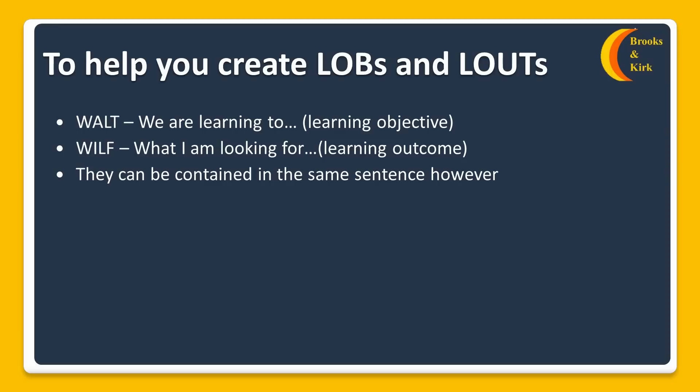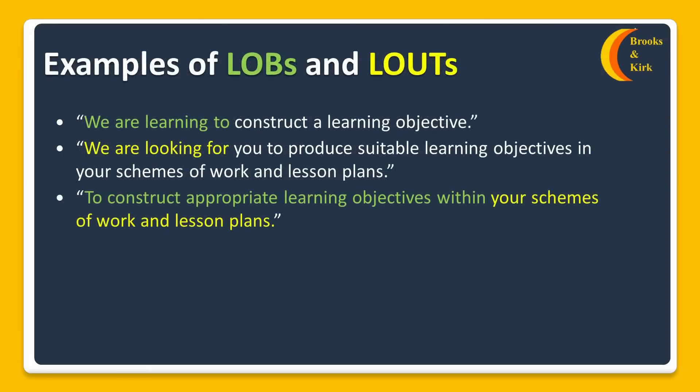As you become more proficient, you'll probably combine the learning objective and outcome within the same sentence. For example — green is the learning objective, yellow is the learning outcome: 'Today we are learning to construct a learning objective' and the outcome is 'to produce suitable learning objectives in your schemes of work and lesson plans.' Another example: 'To construct appropriate learning objectives within your schemes of work and lesson plans' — the outcome being that you will have an appropriate learning objective within your scheme of work.